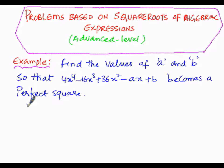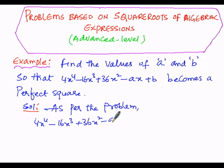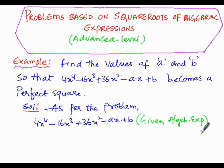The solution starts now. As per the problem, the given algebraic expression is 4x⁴ minus 16x³ plus 36x² minus ax plus b. When it becomes a perfect square we have to find out a and b. So let us find out the square root of this particular given expression.